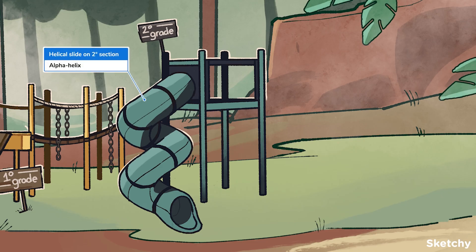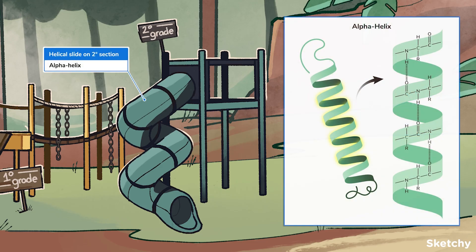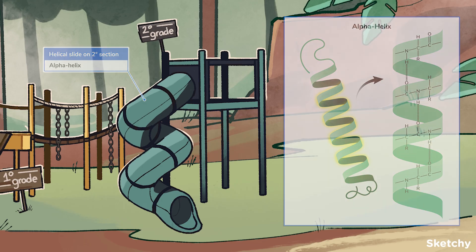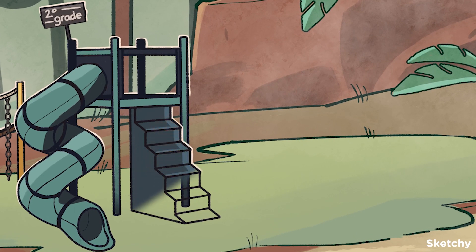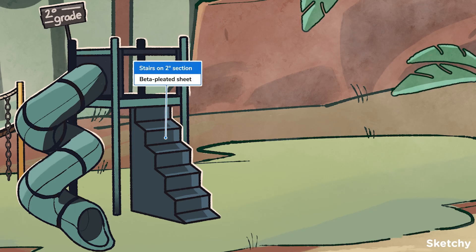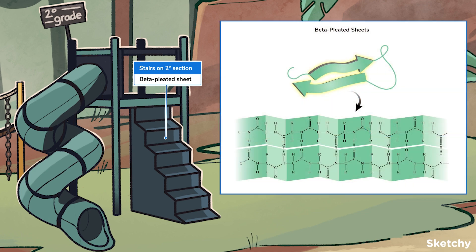This slide represents an alpha helix. The alpha helix pattern looks like a helix — like a super awesome slide that anyone over four foot eight would get stuck in. If you're one of the lucky kids who can go down that slide over and over again without your mom having to tug you out by the ankles, you're going to need to take the stairs to get back up there. And what do you know? These stairs look just like a beta pleated sheet, the second secondary folding pattern.